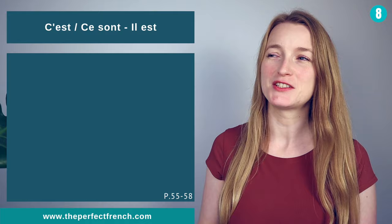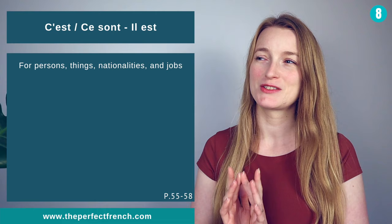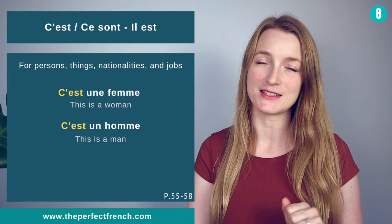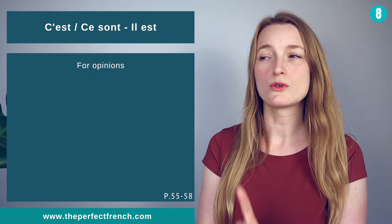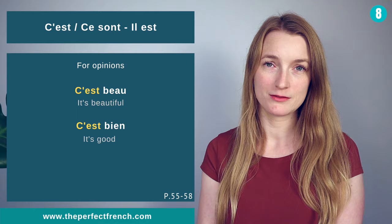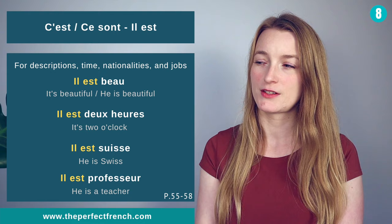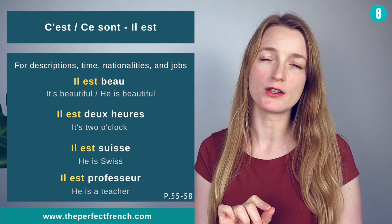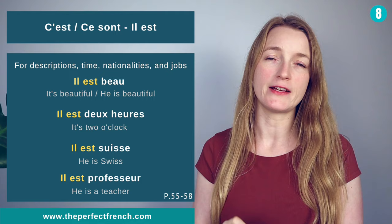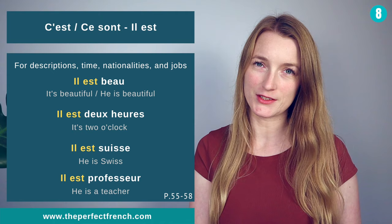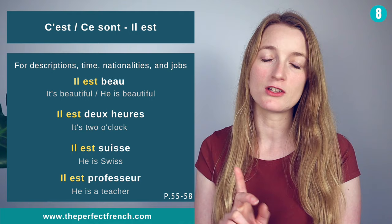The next point is the differences between c'est, ce sont, and il est. C'est and ce sont are used for persons, things, nationalities, and jobs: c'est une femme, c'est un homme. Also for opinions: c'est beau, c'est bien. Il est is used for descriptions, time, nationalities, and jobs: il est beau, il est deux heures, il est suisse, il est professeur. Note there is no article between il est and the job.